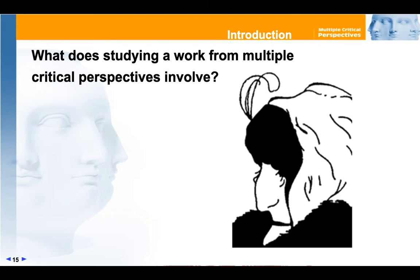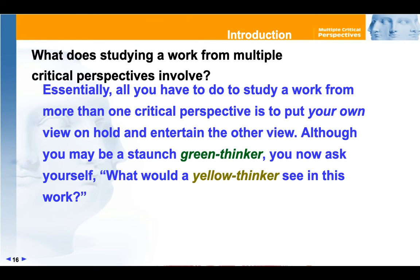There is a picture here of an old woman or a young woman, depending on the way you look at it — and that's exactly what we're doing when we look at literature through multiple literary theories. Think of it as having two pairs of glasses: a green pair and a yellow pair. When you are looking at a piece of literature, you're going to look at it as though you're looking through multiple pairs of glasses.